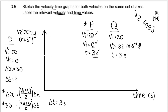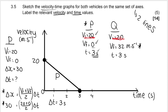Both lines start at 20 m/s on the velocity axis. For vehicle P: the final velocity is zero and it takes 3 seconds, so that straight line goes down and cuts the time axis at 3 seconds. You can mark 1, 2, 3 seconds on the x-axis. So P's line runs from 20 m/s at t=0 down to zero at t=3 seconds. Connect those points, label the line P, and we're done with P.